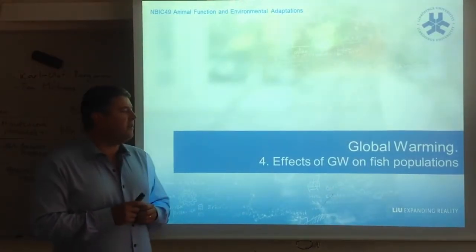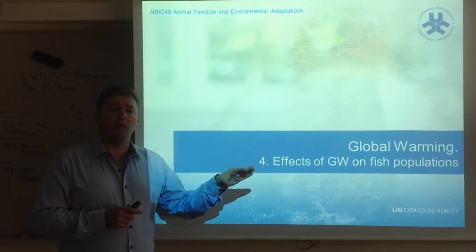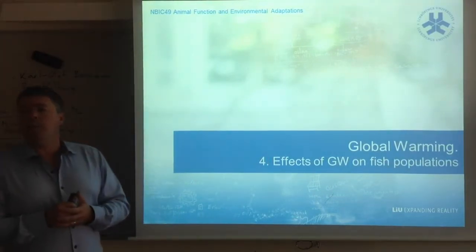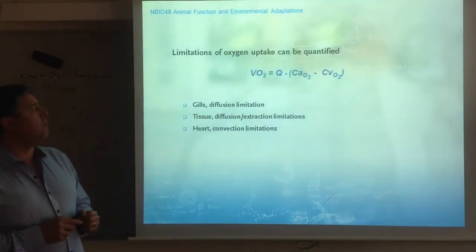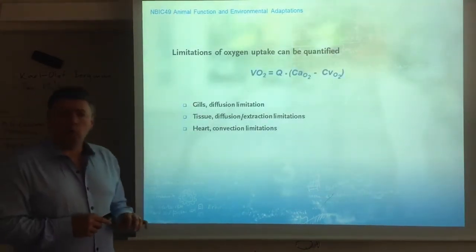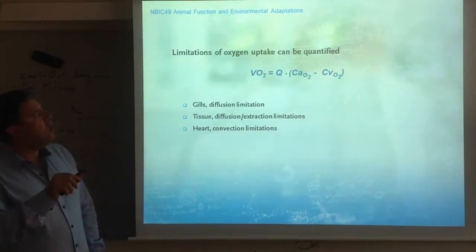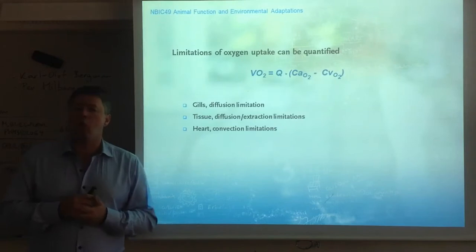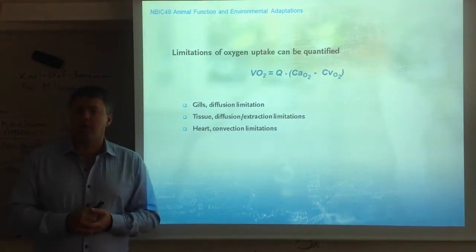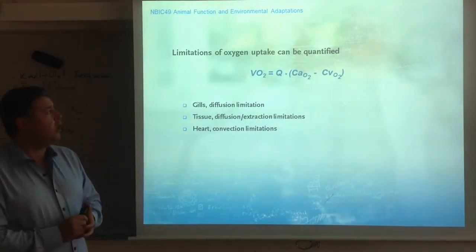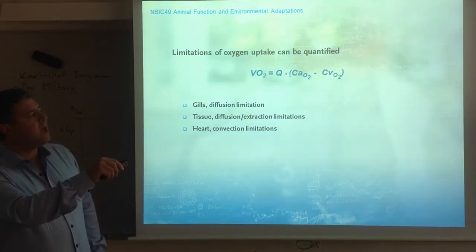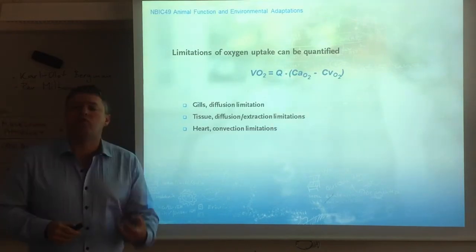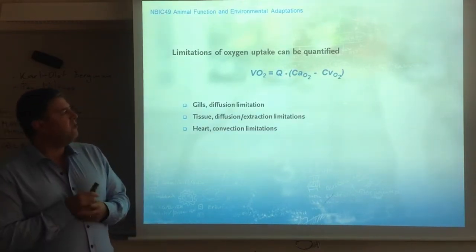We'll continue with the lecture now looking at the effects of global warming on fish populations. We will be using the concepts defined so far, specifically the concept of aerobic scope. We can quantify the limitations to oxygen uptake. Remember that oxygen consumption is the product of cardiac output times the oxygen extraction from the blood — the arterial minus the venous.